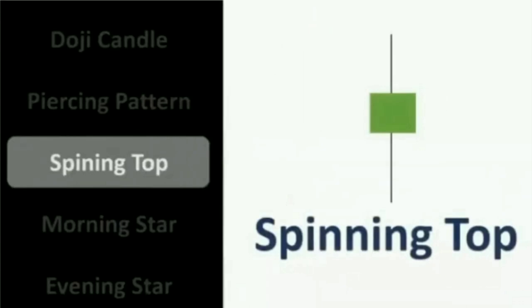The next candlestick pattern is the spinning top pattern. The spinning top indicates indecision in the market and is quite similar to the doji candle — the only difference is that the body of the spinning top is slightly larger. Remember that the spinning top candlestick pattern with a huge volume has the most significance, and this version is the one to consider for analysis. All others should be ignored.